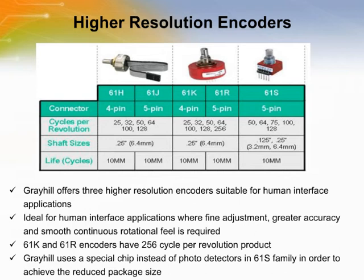Greyhill offers three higher resolution encoders suitable for human interface applications. These products are used where fine adjustment, greater accuracy, and a smooth continuous rotational feel is required. The original 61H and 61J products can be produced with resolutions up to 128 cycles per revolution, equivalent to 512 pulses per revolution. Previously a maximum of 32 pulses per revolution were available. On market demand, 256 cycles per revolution products — the 61K and 61R encoders — were developed. Greyhill uses a special chip instead of photodetectors in the 61S product in order to achieve the reduced package size.